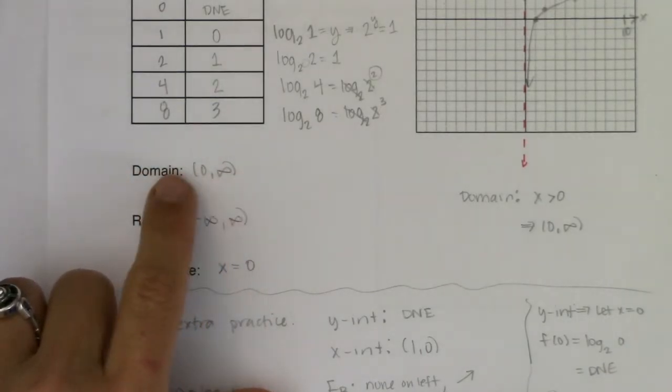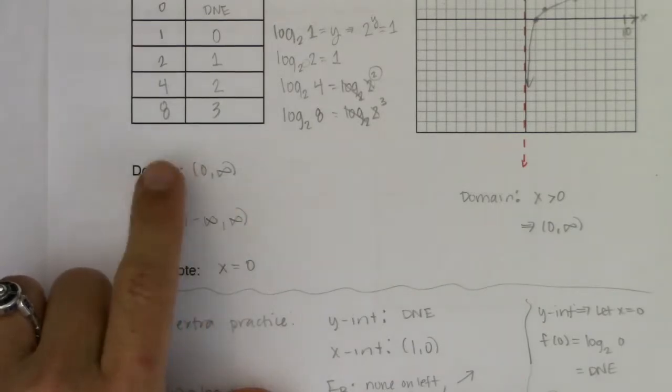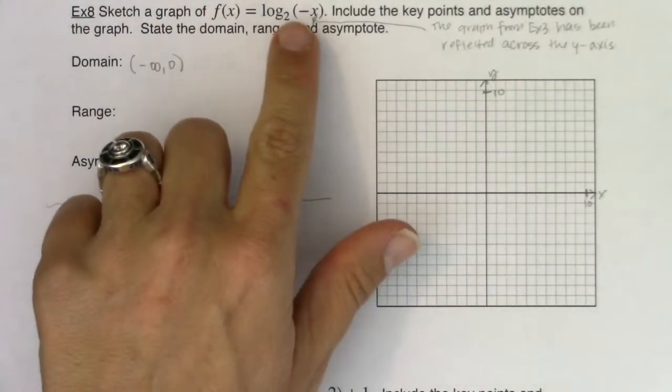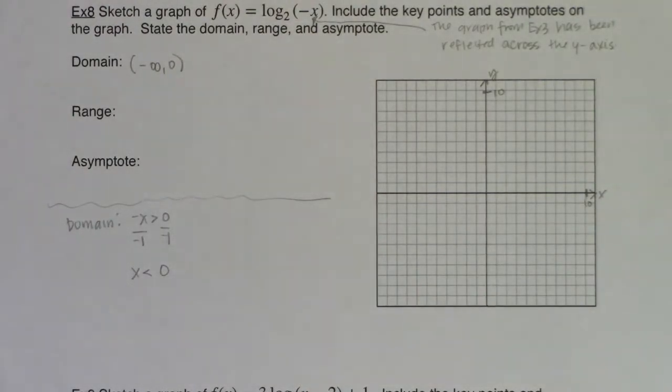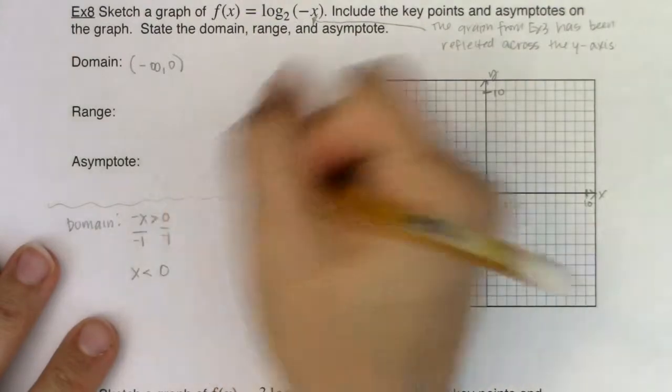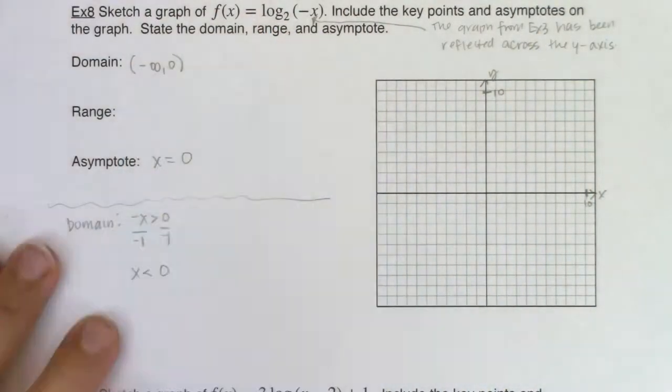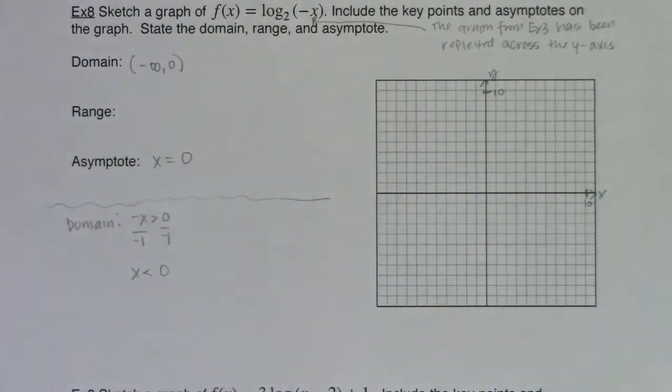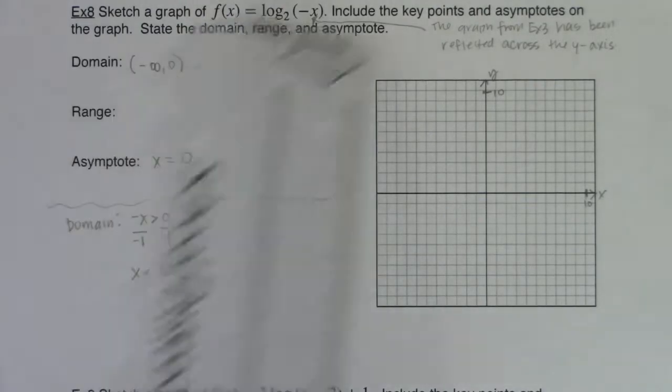And why I'm putting negatives in front of both of these is because your domain deals with x values. And for this transformation, we're putting negatives in front of those x values. So it did flip-flop. But wherever your argument zeroes out, which is still zero, that is going to become a vertical asymptote. So let me go get that graph in. And then we will pick out some key points.